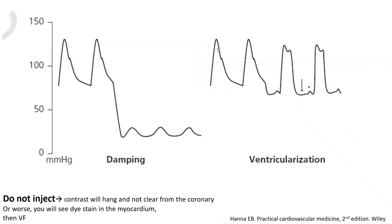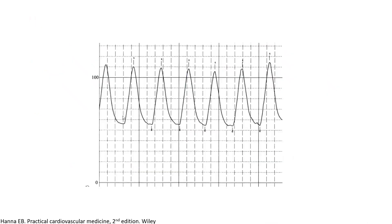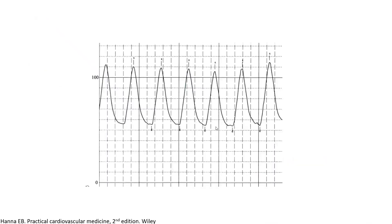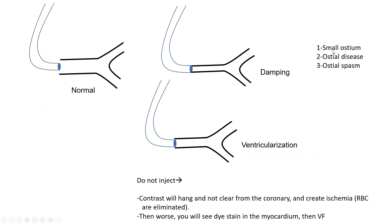Normally when you engage, the pressure shouldn't change much — it should stay as aortic pressure, down-sloping in diastole with a dicrotic notch. But here when we engage, we get what we call ventricular rise — it's rectangular, up-sloping in systole with an A wave. This is a subtle form of ventricularization. I can tell it's ventricular rise because it's horizontal in diastole with an A wave. You don't see a dicrotic notch — you see a subtle A wave instead. It implies a small ostium, ostial disease, or ostial spasm.